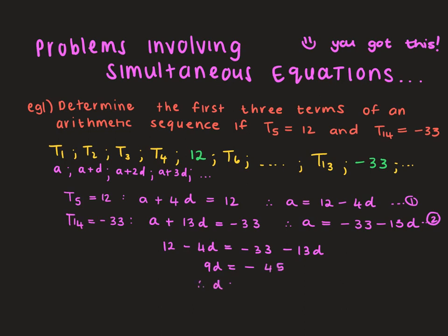Dividing both sides by 9, your constant difference is negative 5. That looks good because you can see that the sequence went from a positive integer to a negative integer, so we're clearly subtracting. That makes perfect sense.